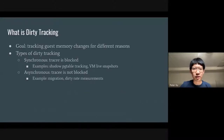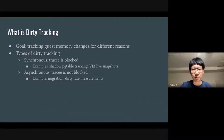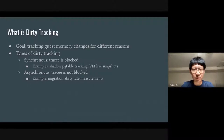So what is dirty tracking? It is the method to track guest memory changes for different reasons. There are actually two types of dirty tracking. The first one is synchronous, which means the tracee, or the guest, needs to be blocked during the process — for example, shadow page table tracking or live snapshot. The other one, more commonly known because of migration, is asynchronous page tracking, where we don't need to stop the virtual machine or the vCPU, but instead report dirty information afterwards using some provided interfaces.